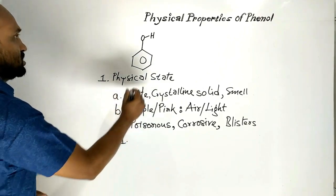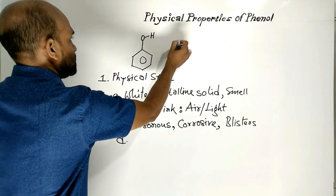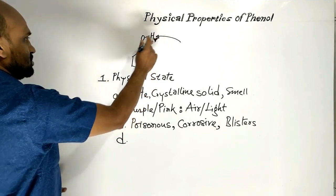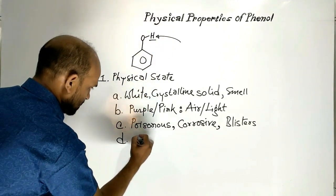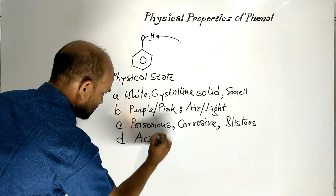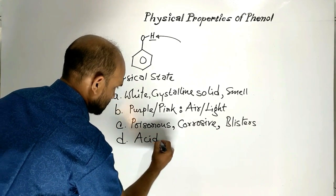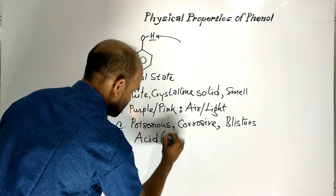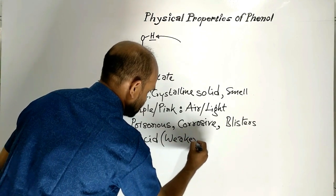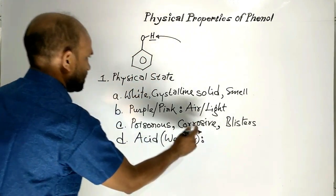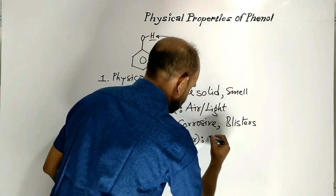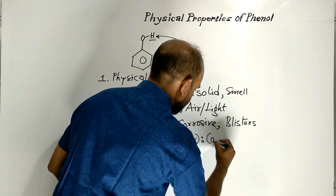Because of these hydrogen atoms, Phenol acts as an acid in solution, but it is a kind of weak acid. It is also known as carbolic acid.